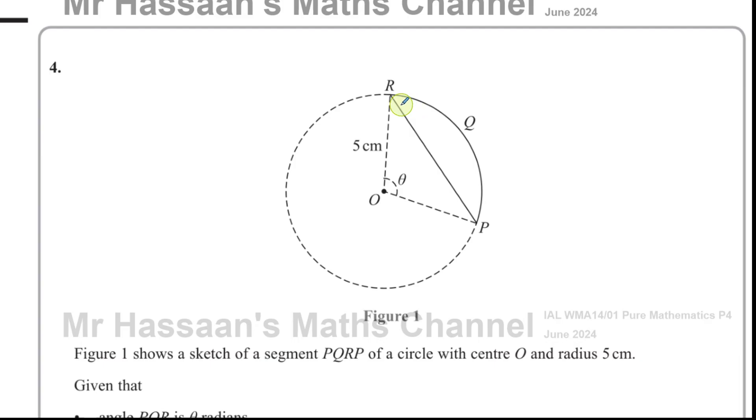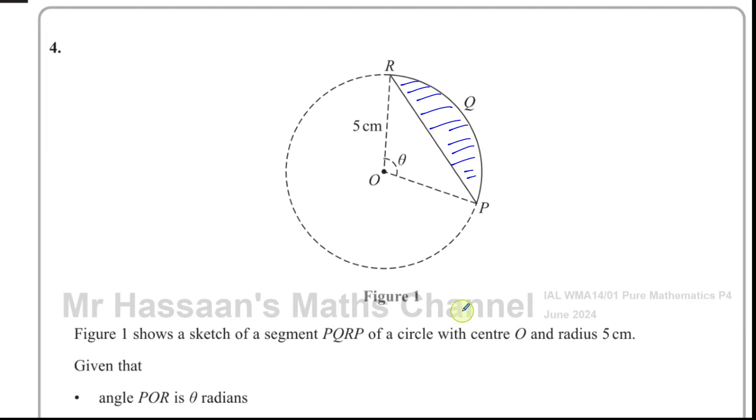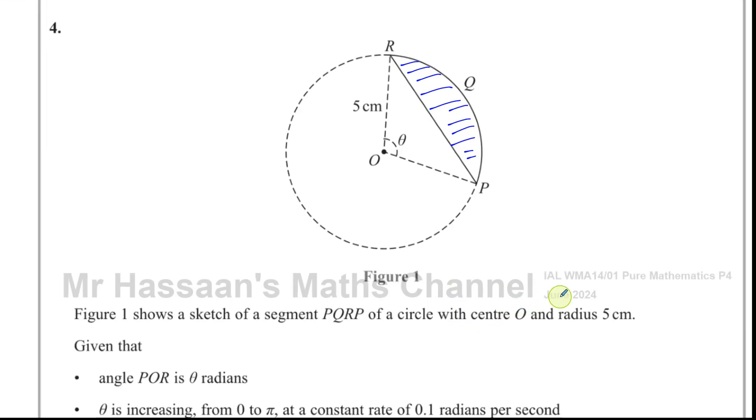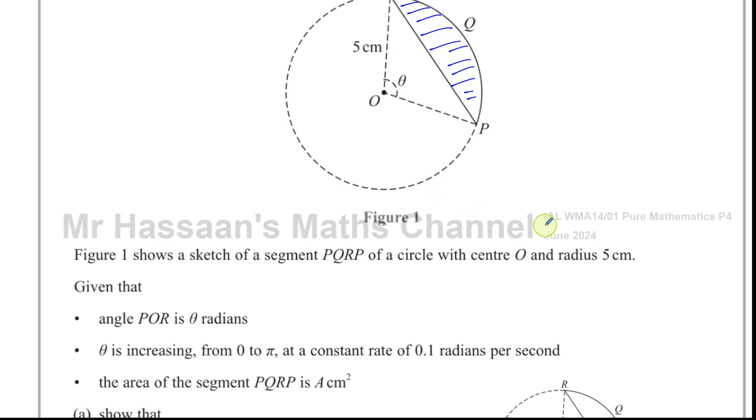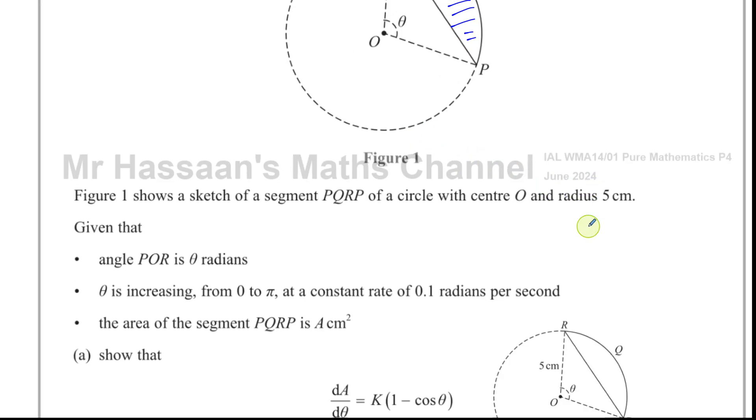This is the segment here. This part is a segment. It's like we're just taking the crust of the pizza, of a circle with center O and radius 5 centimeters. We're told that angle PQR is theta radians. That's the angle subtending the segment.